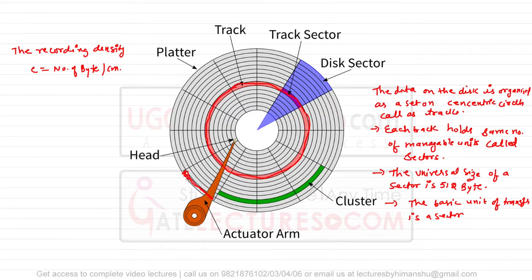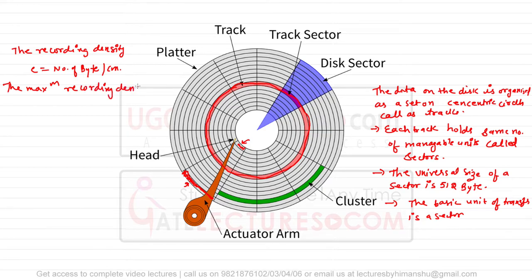In the outer track, because the track is very wide, the outer track must contain more bytes and the inner track must contain fewer bytes. But the maximum recording density is at the innermost track — that is why even if it is the outer track or the inner track, both contain the same number of bytes per centimeter. So the maximum recording density is at the innermost track.